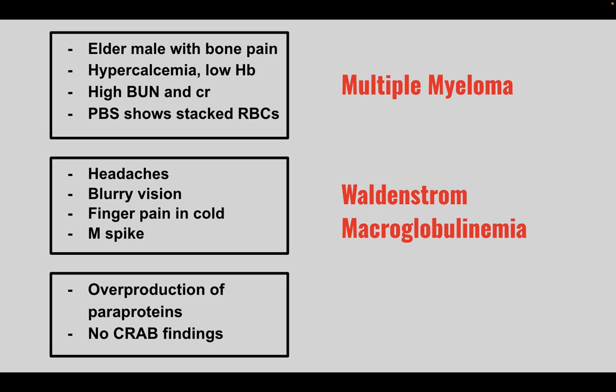Next is a patient that has an overproduction of paraproteins. They could have an IgM spike or an IgG spike but no clinical findings. This is called MGUS, or monoclonal gammopathy of undetermined significance.